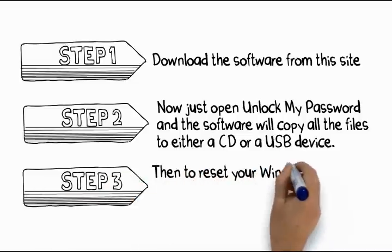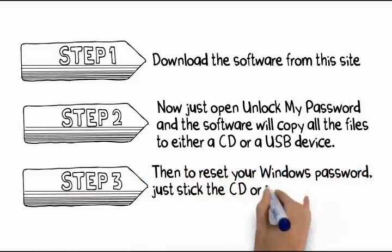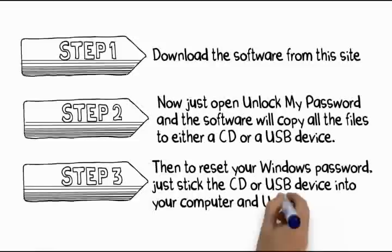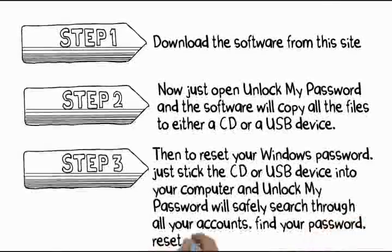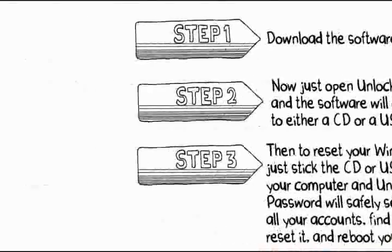Step 3: Then, to reset your Windows password, just stick the CD or USB device into your computer and Unlock My Password will safely search through all your accounts, find your password, reset it, and reboot your computer.